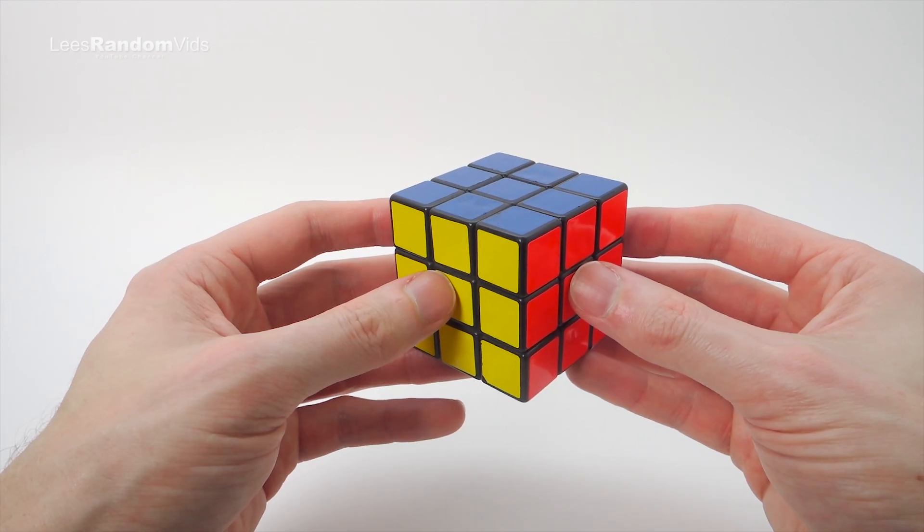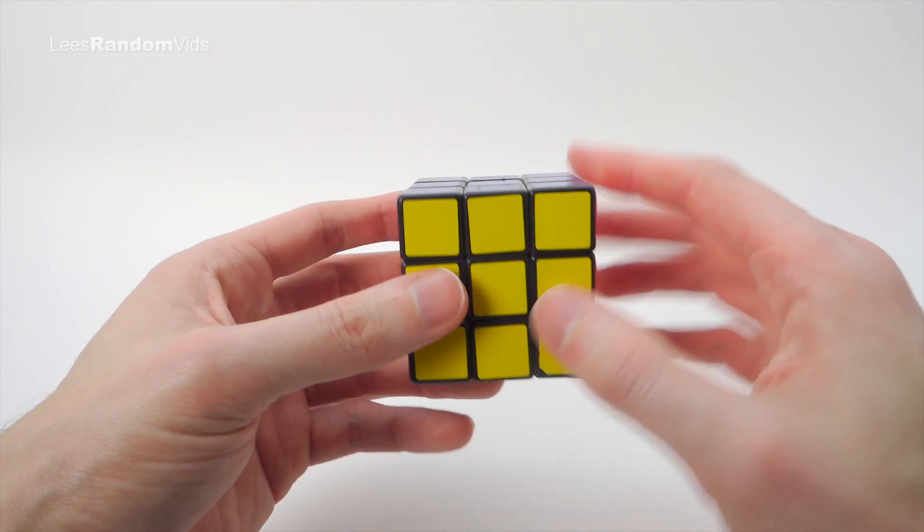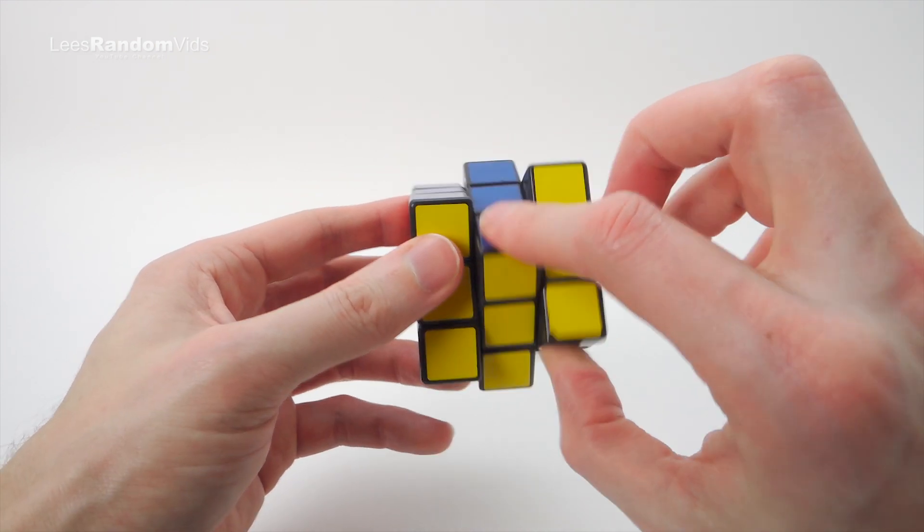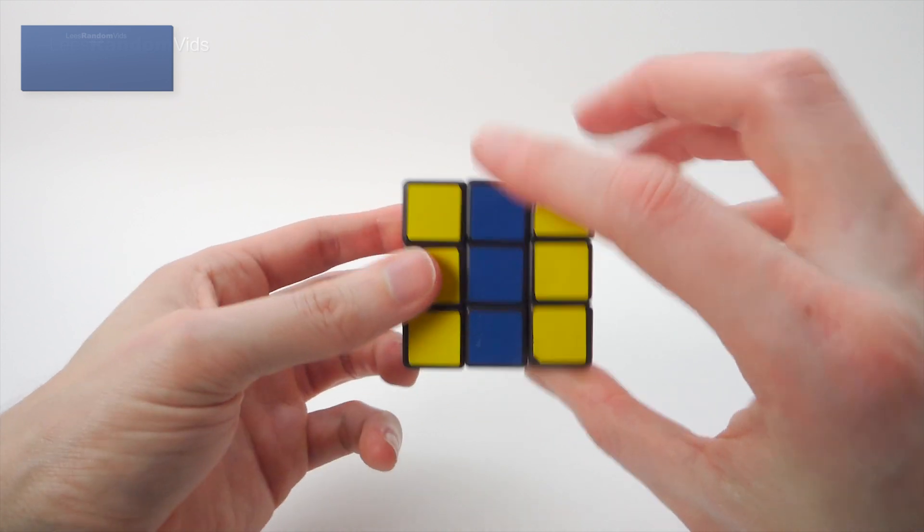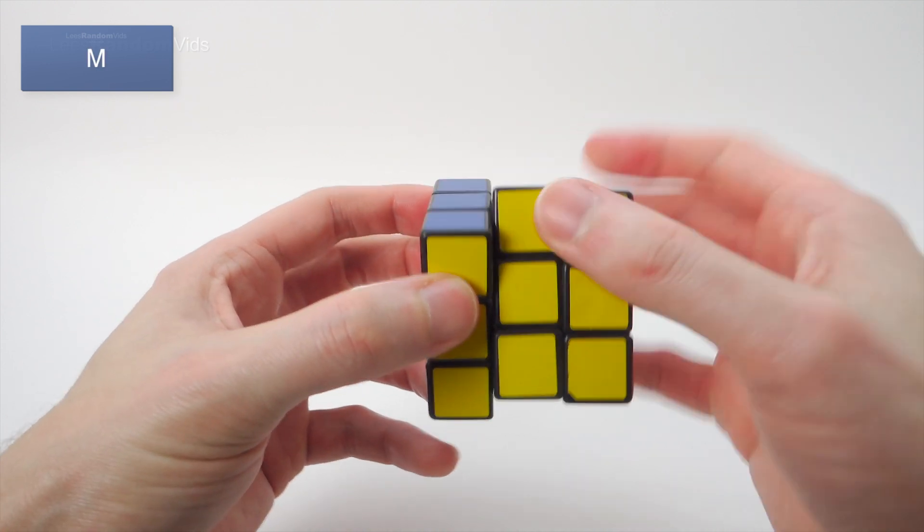So as well as the normal algorithm letters F, B, L, R, etc., sometimes you do need to use a few extra letters for these middle rows. For example, this middle row here we will give the letter M for middle. And that would be M, and that would be M inverse.